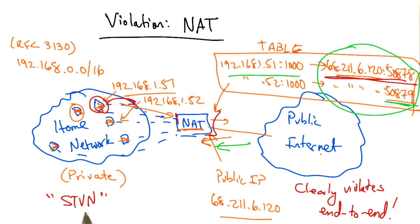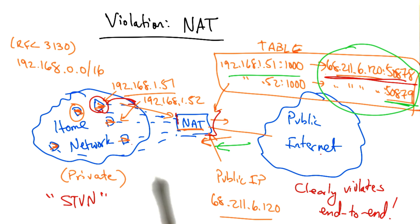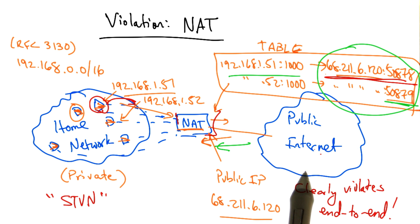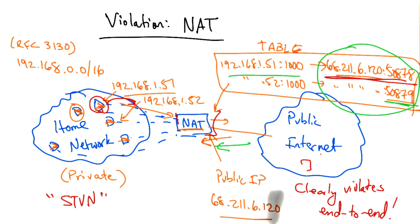Even with these types of hacks and workarounds for NAT, it's clear that network address translation is a violation of the end-to-end principle, because by default, two hosts on the internet — one in the home network and one on the public internet — cannot communicate directly by default.